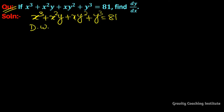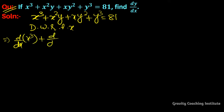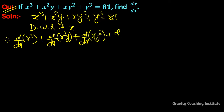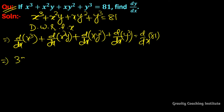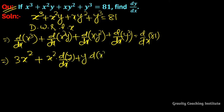So differentiating both sides with respect to x: derivative of x⁴ plus derivative of x²y plus derivative of xy² plus derivative of y⁴ equals derivative of 81. This gives 3x² plus, using the product rule, x² into derivative of y plus y into derivative of x².